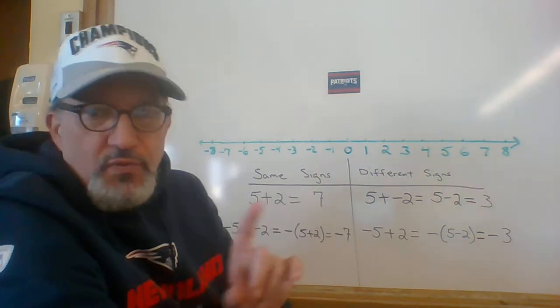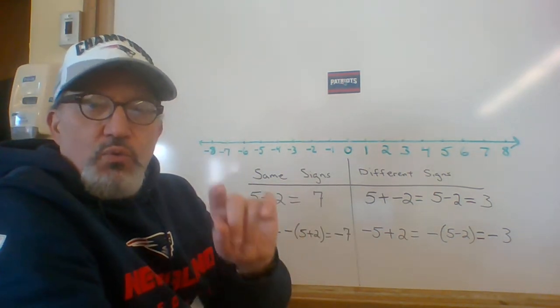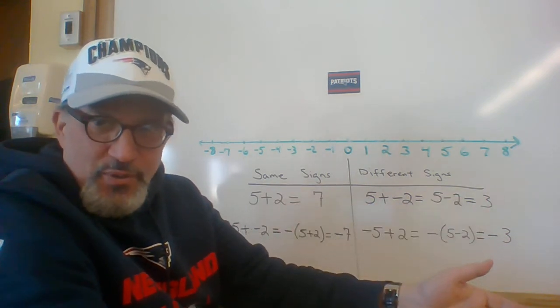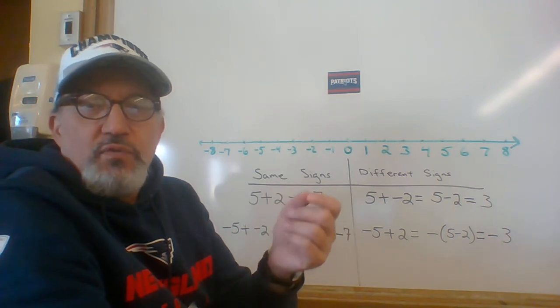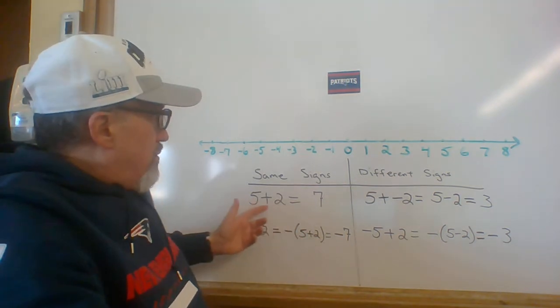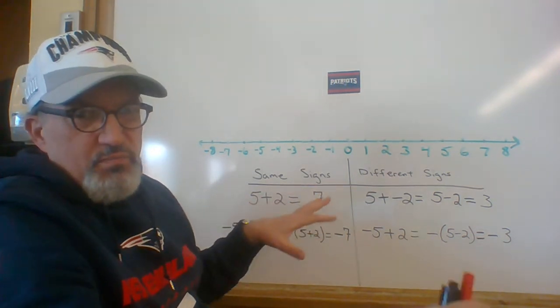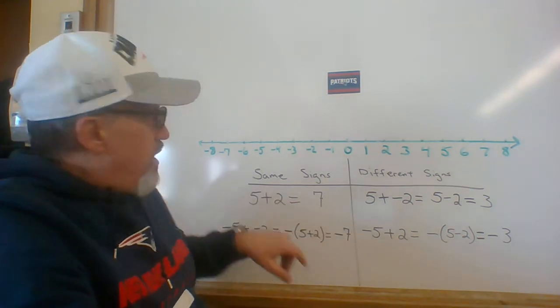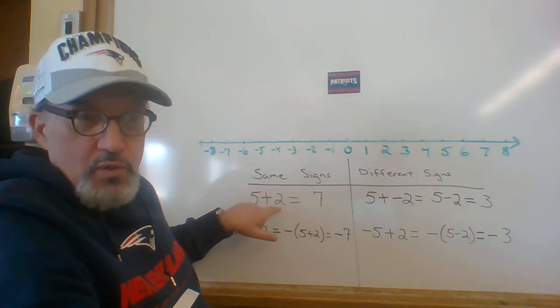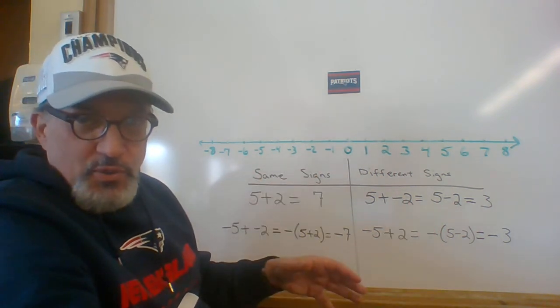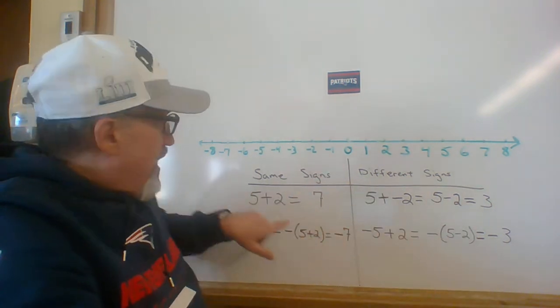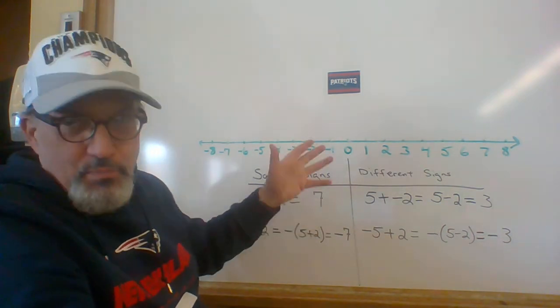How do we add two numbers that have the same signs? The rule is we add their absolute values the way we always have, but then the answer will have the sign that the two original numbers both had. Now with 5 plus 2 is 7, you probably don't think you need any explanation for that. But the absolute value of 5 is 5, the absolute value of 2 is 2. We add the two absolute values 5 plus 2. We give the sum or the answer the same sign that the two numbers had, so it's positive 7.